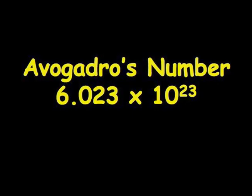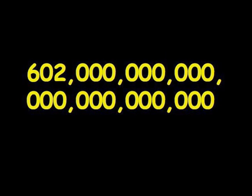A mole just describes a number. It's the same as saying you have a dozen eggs or you're buying a ream of paper — 500 pieces of paper. It's just another way of describing Avogadro's number, 6.02 times 10 to the 23rd. Now 10 to the 23rd, unless you really give it some thought, there's no way you can really comprehend how big that number is.